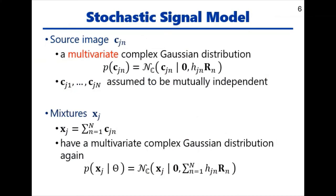In FCA, each source image is modeled by a multivariate complex Gaussian distribution with covariance matrix HR. Source images are assumed to be mutually independent. Consequently, the mixtures X have a multivariate complex Gaussian distribution, as shown here.